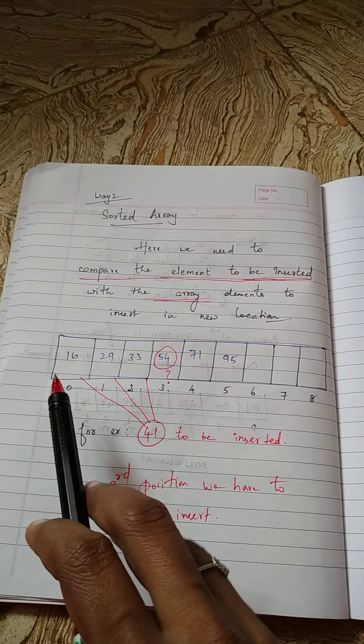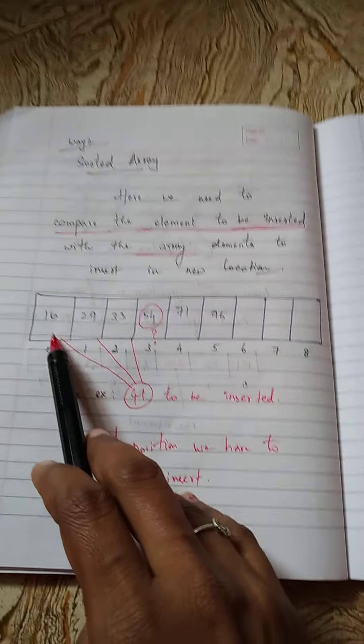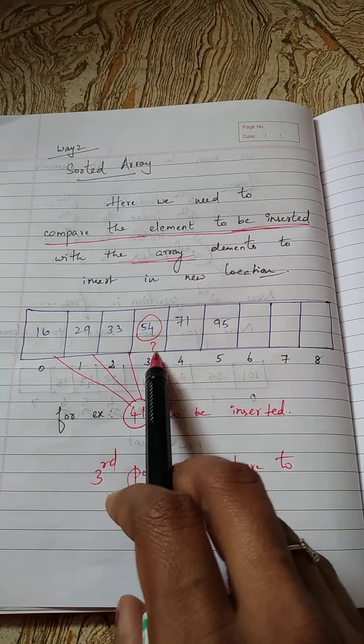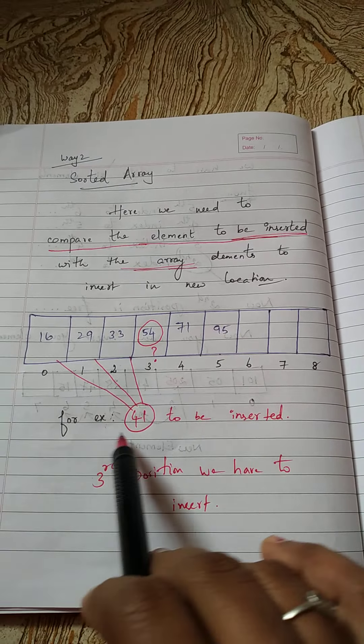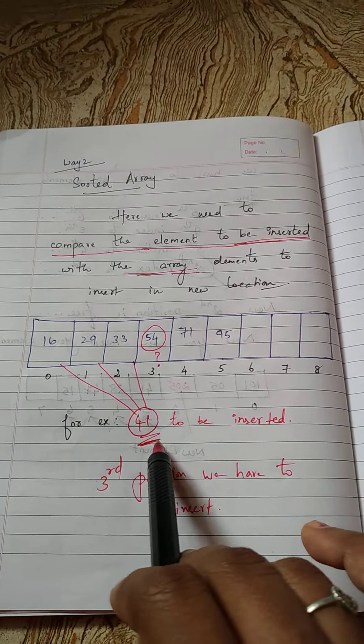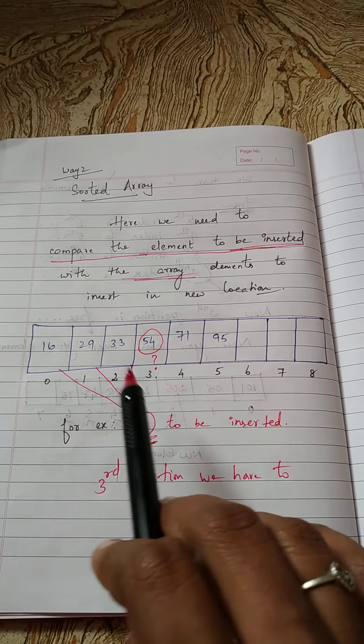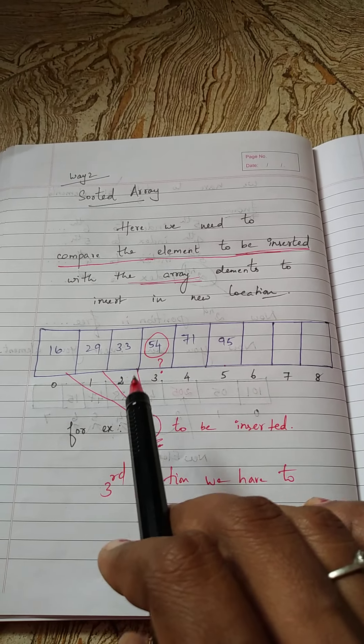Imagine a situation: here you are having a sorted array: 16, 29, 33, 54, 71, 95. And you want to insert an element 41. As this is in ascending order, by looking into the array you can tell me the position. Yes, next to 33 you have to insert the element.